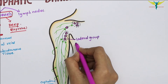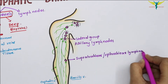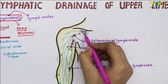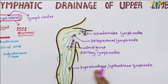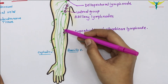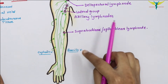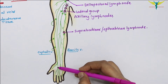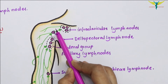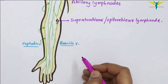Some of the medial group of lymph vessels terminate into the supratrochlear or epitrochlear lymph nodes, which are situated just above the medial epicondyle along the basilic vein. A few lymph vessels drain the thumb and end into the delto-pectoral lymph node. The efferents from the delto-pectoral lymph node then pierce the clavipectoral fascia to drain into the apical group of the axillary lymph nodes.